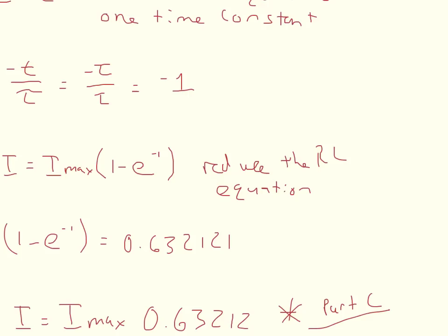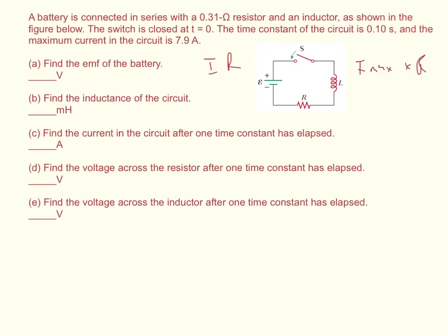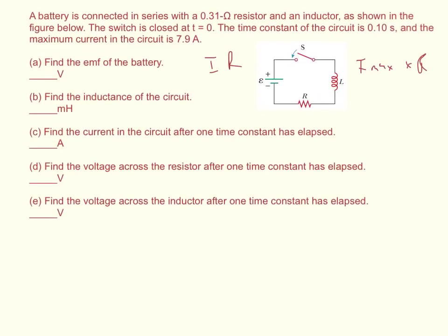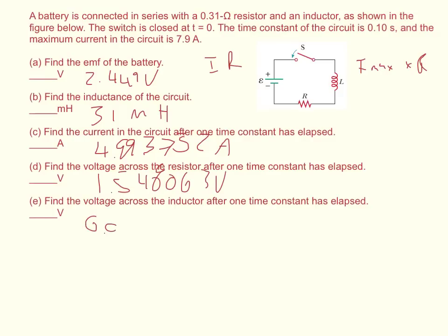Now, supposing that you're wanting to check yourself, I'll go ahead and show you the numbers that I got and you can see whether or not you're plugging stuff in the calculator correctly. So for part A, I got 2.449 volts. For part B, I got 31 millihenries. For part C, 4.993752 amps. For part D, 1.548063 volts. And part E, 0.900937 volts.